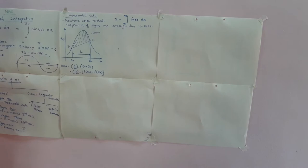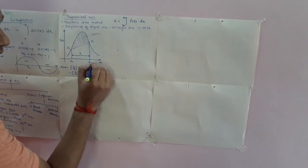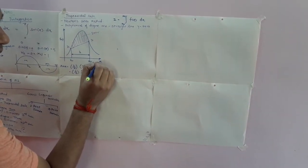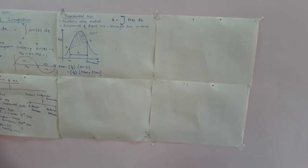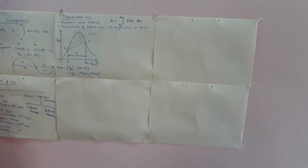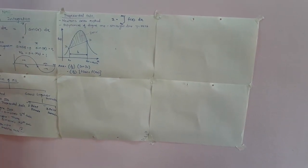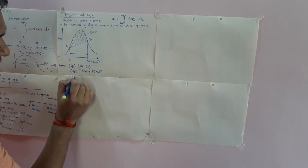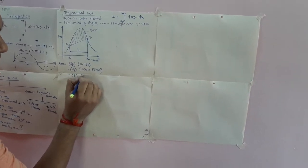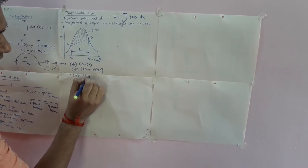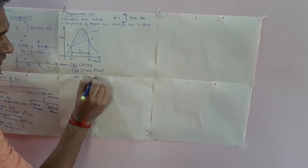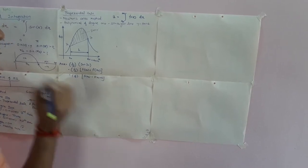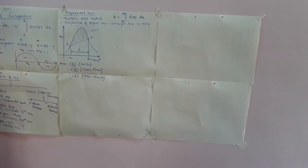We can write y0 = f(x0), so the formula becomes h/2 × [f(x0) + f(xn)]. Since xn = x0 + h when using one major strip, we write: h/2 × [f(x0) + f(x0 + h)]. This is the formula for a single strip.